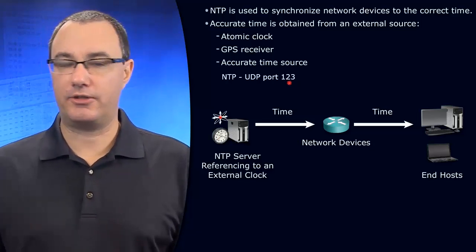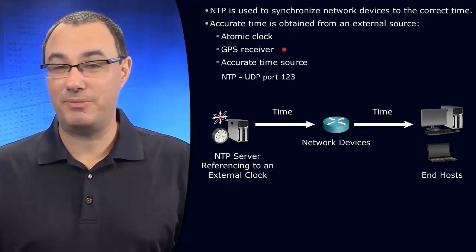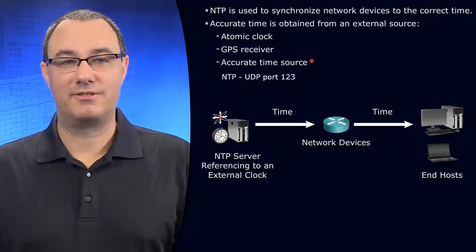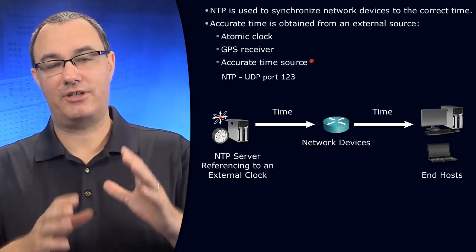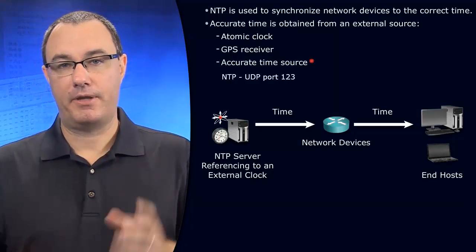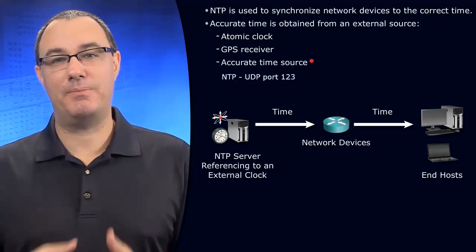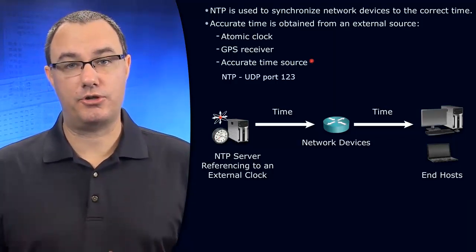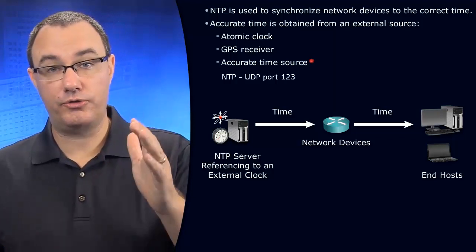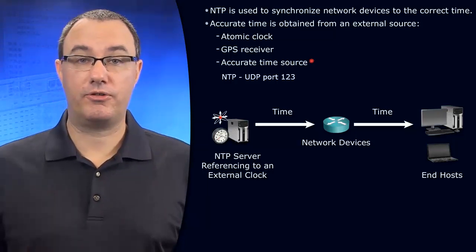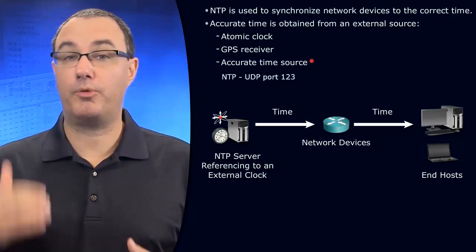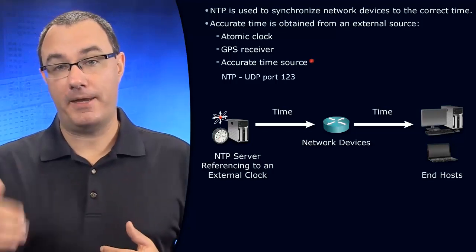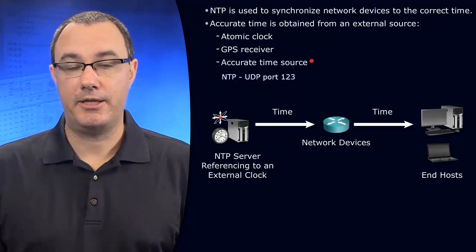NTP sources can get their time from an atomic clock, GPS, a pulsar, or some other accurate time source — entities that can have hyper-accurate time. We then disseminate that time information to other devices. There's a trickle-down architecture where some devices are closer in proximity to trustworthy time sources, and internal devices point to those first devices in our network that received the time.